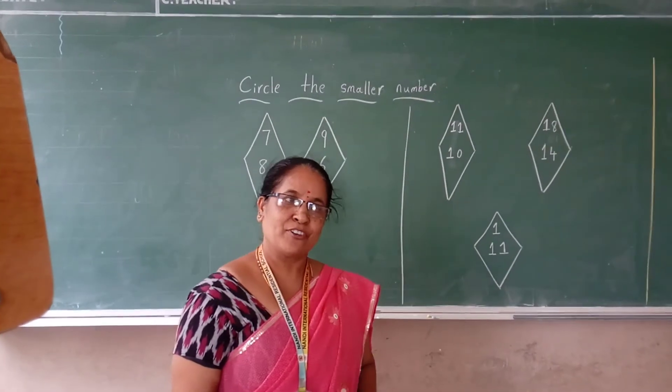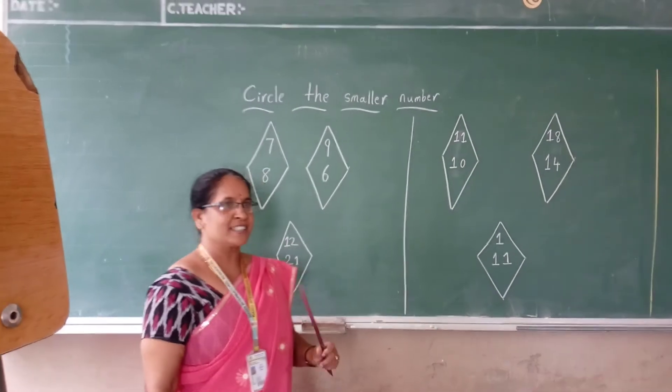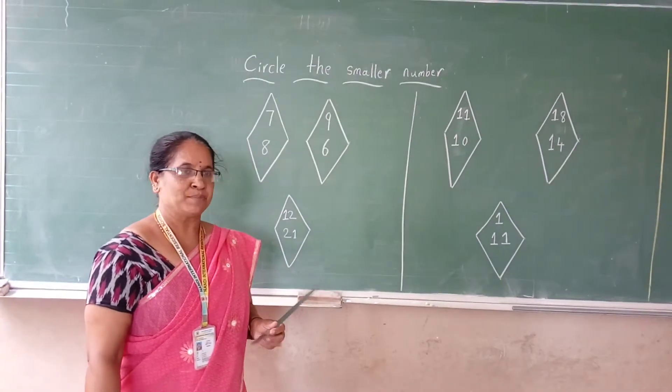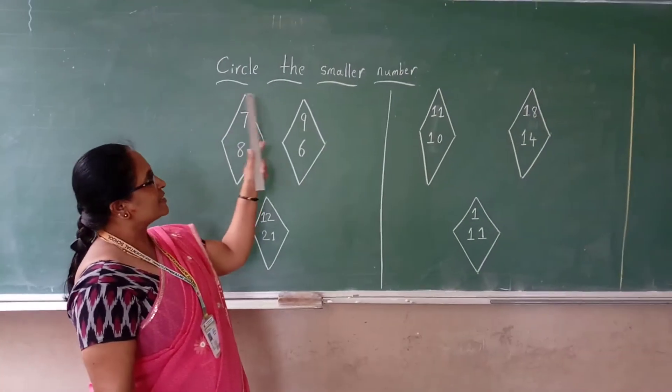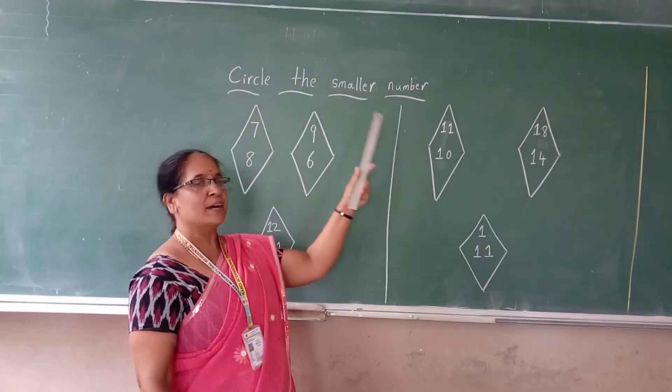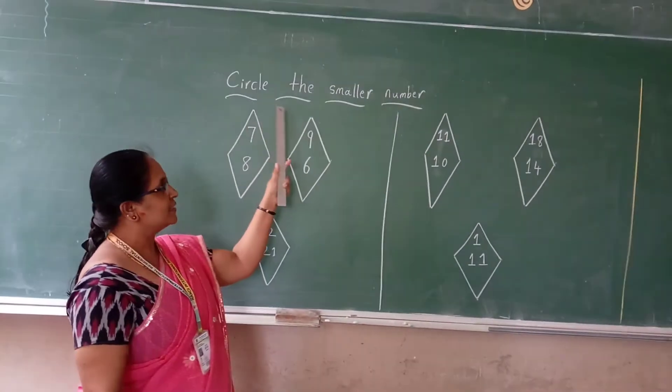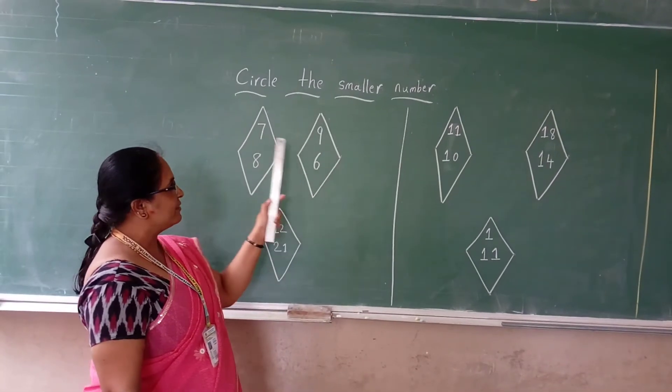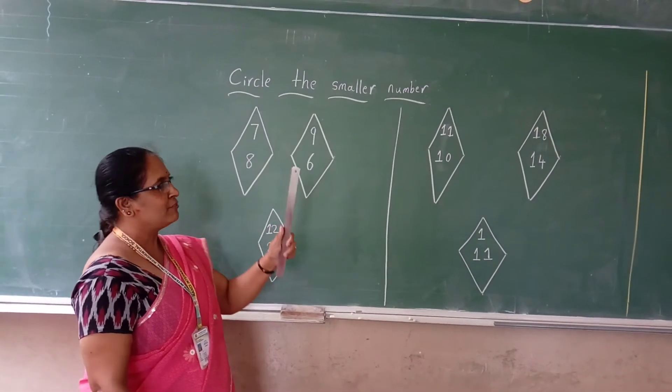Welcome to the online class for Kirju. See here, yesterday class we discussed 11 to 20 number names. We may have discussed sorting the smaller number. What is this? Sorting the smaller number. See here, in some boxes they have given the numbers here. Let us start writing.